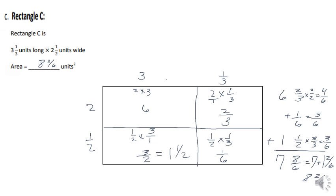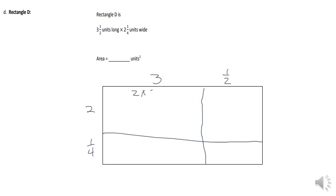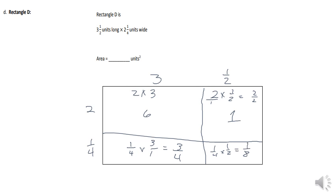On problem D, we split the rectangle with dimensions three and one-half by two and one-quarter. Two times three is six; two times one-half gives us two-halves, which equals one whole. One-fourth times three equals three-fourths, and one-fourth times one-half equals one-eighth. Adding them up: the whole numbers sum to seven. For the fractions, I convert three-fourths by multiplying by two over two to get six-eighths; six-eighths plus one-eighth equals seven-eighths. So the area is seven and seven-eighths square units.